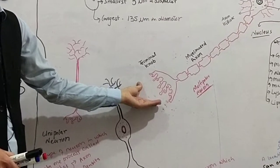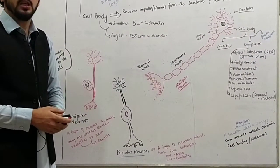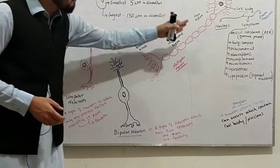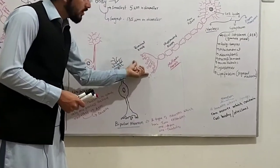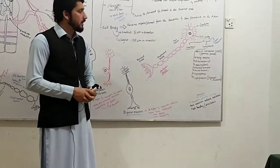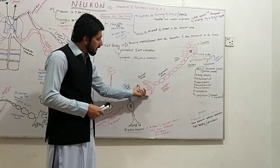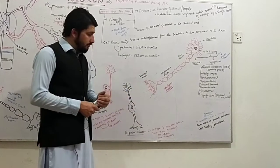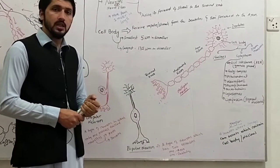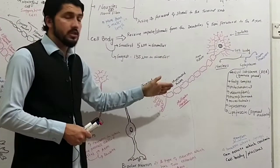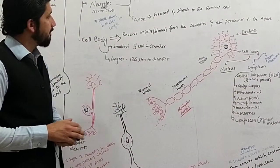The axon conducts the signal toward the terminal lobe. Neurotransmitters are found within the terminal lobe. In the next lecture, we will discuss how these neurotransmitters travel and how the action potential develops.